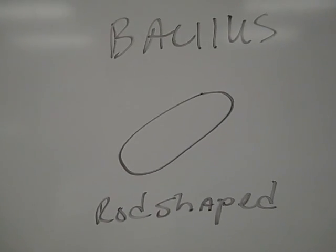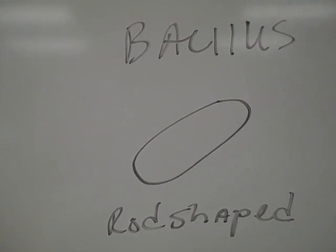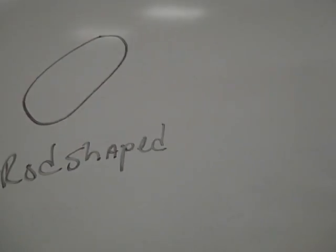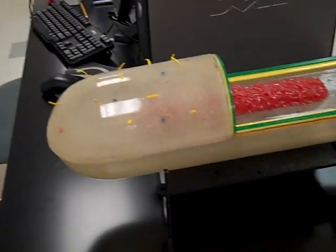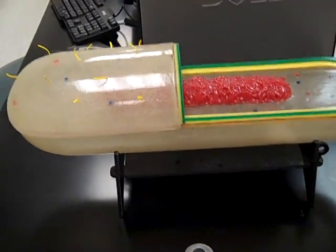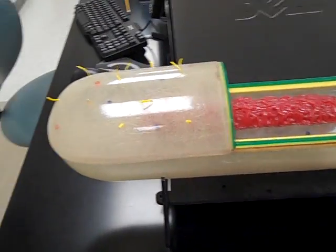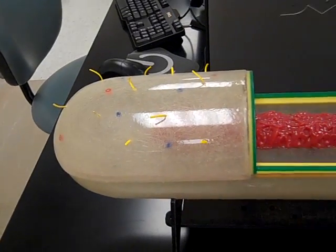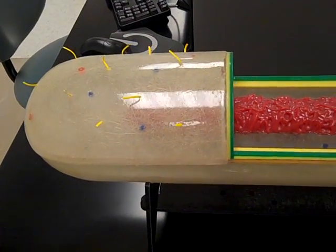And three, a bacillus, which is rod-shaped, sort of look like little cigars. Now the model I have to show to you today is obviously a bacillus, so it is rod-shaped. And it has certain structures that you're going to need to know.